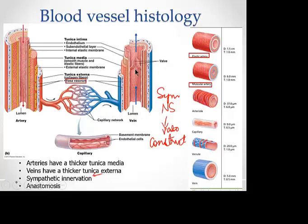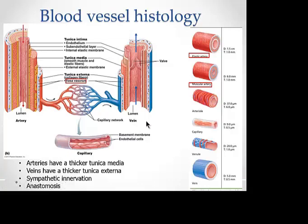In veins — especially those of the lower limb and abdomen — blood flows upward against gravity. Because the wall is so thin, blood could fall back down. So veins have valves, especially in veins of the lower limb and abdomen. When blood tries to come back down, these valves bulge like a cushion and close, preventing backflow. This is one way that venous return is helped back towards the heart.